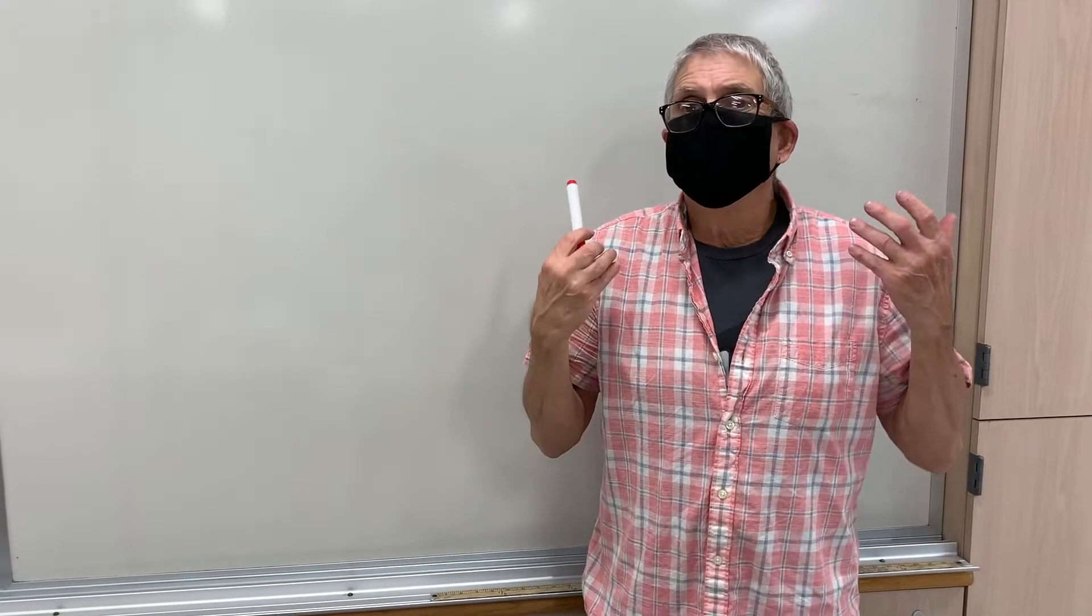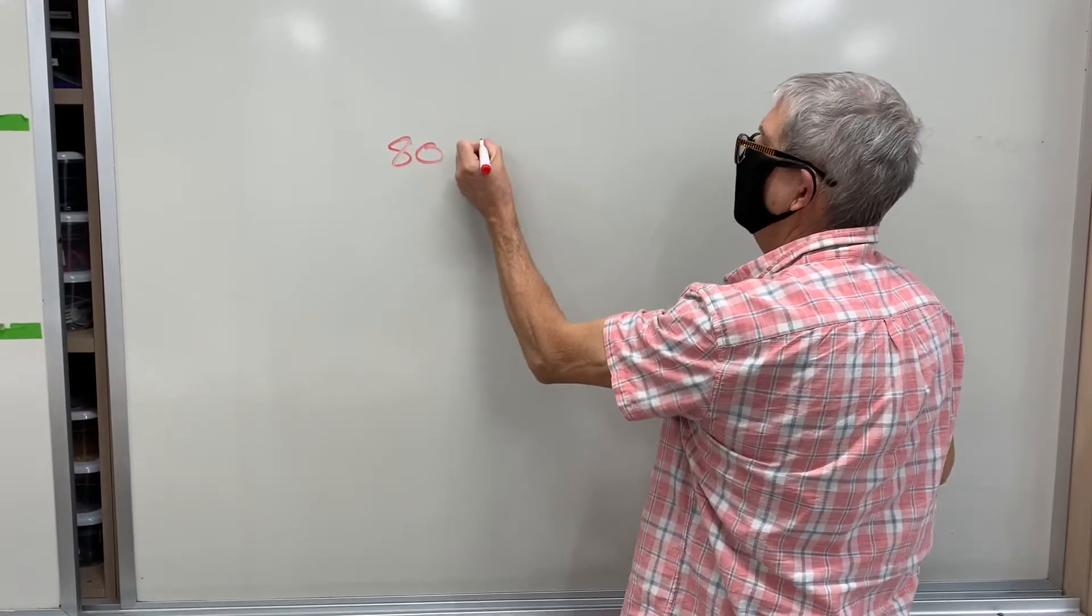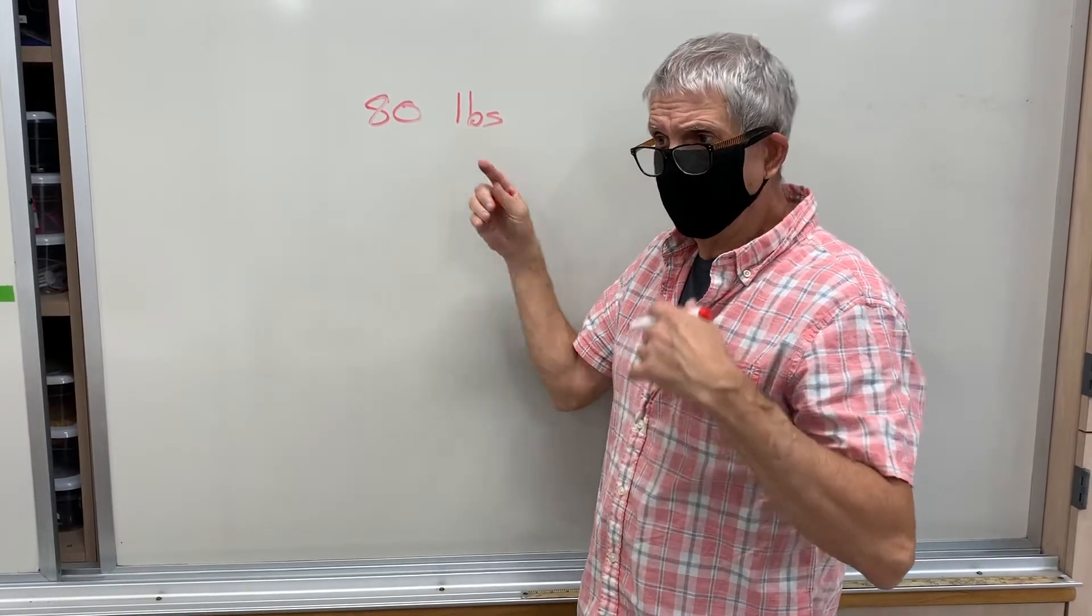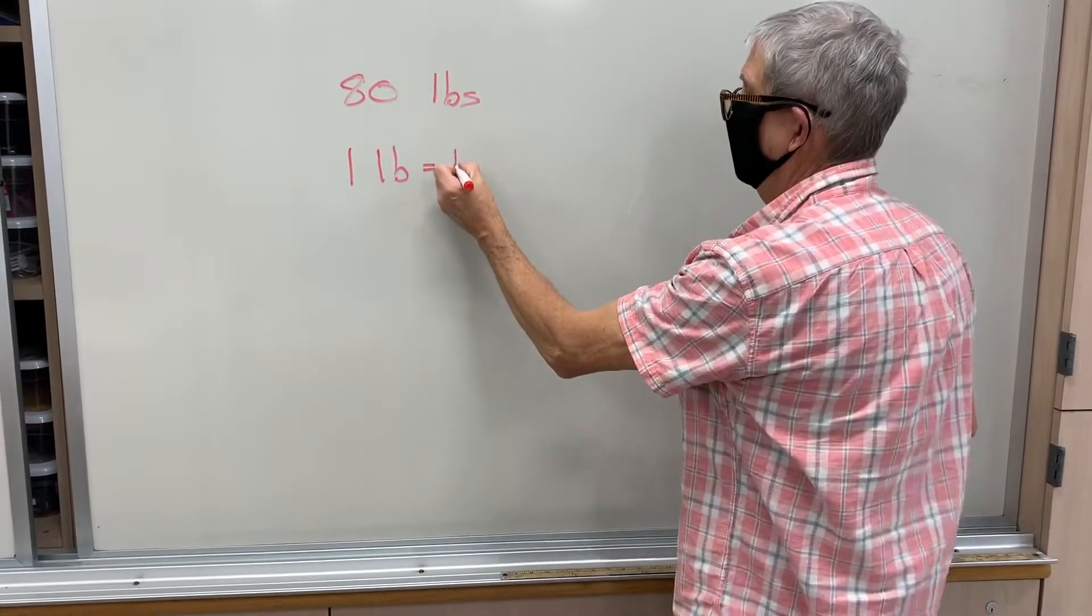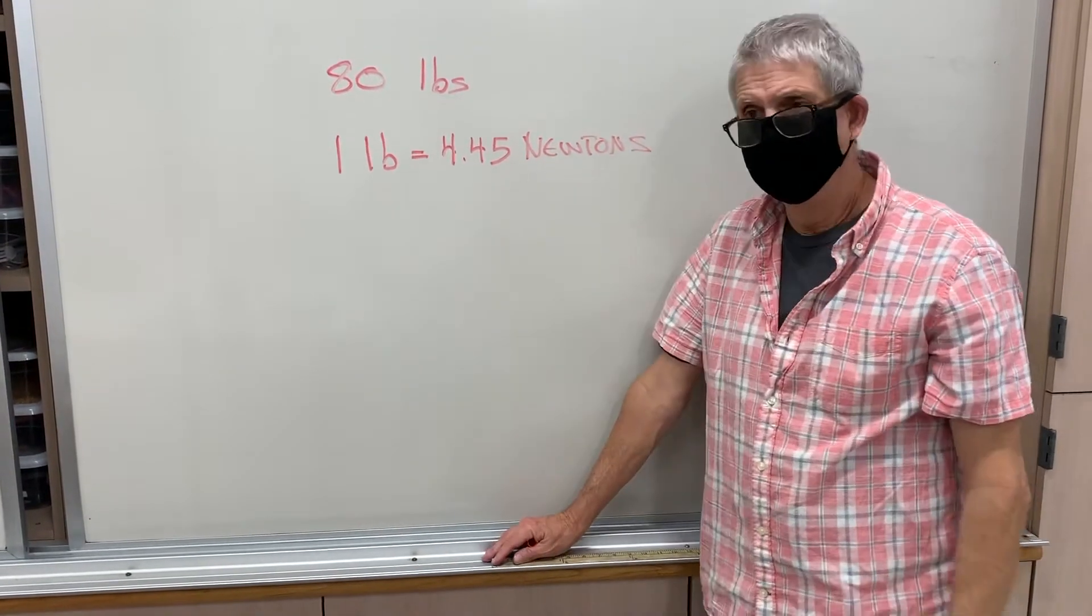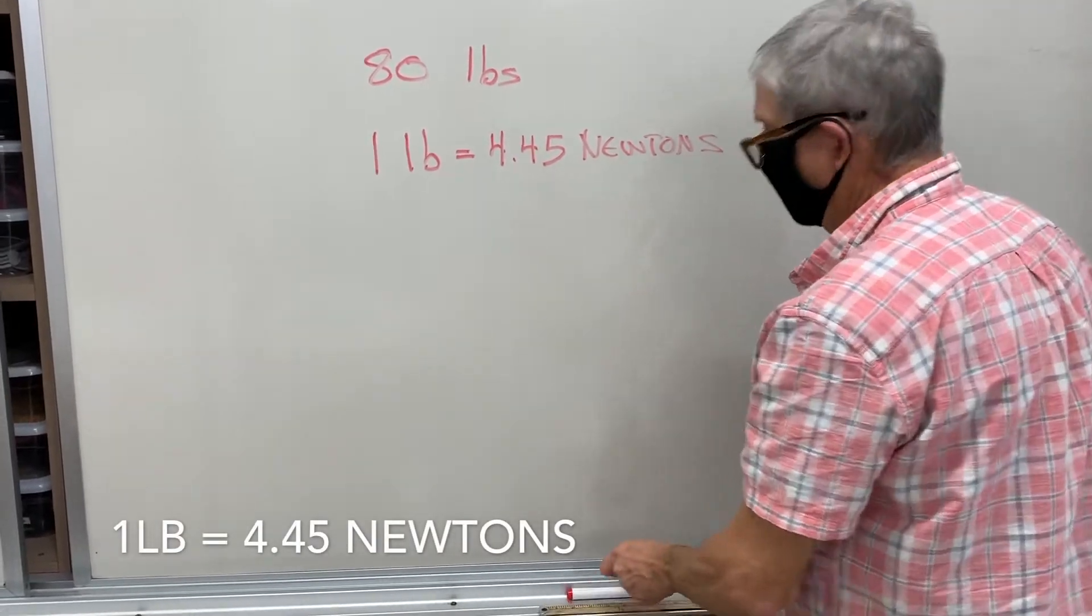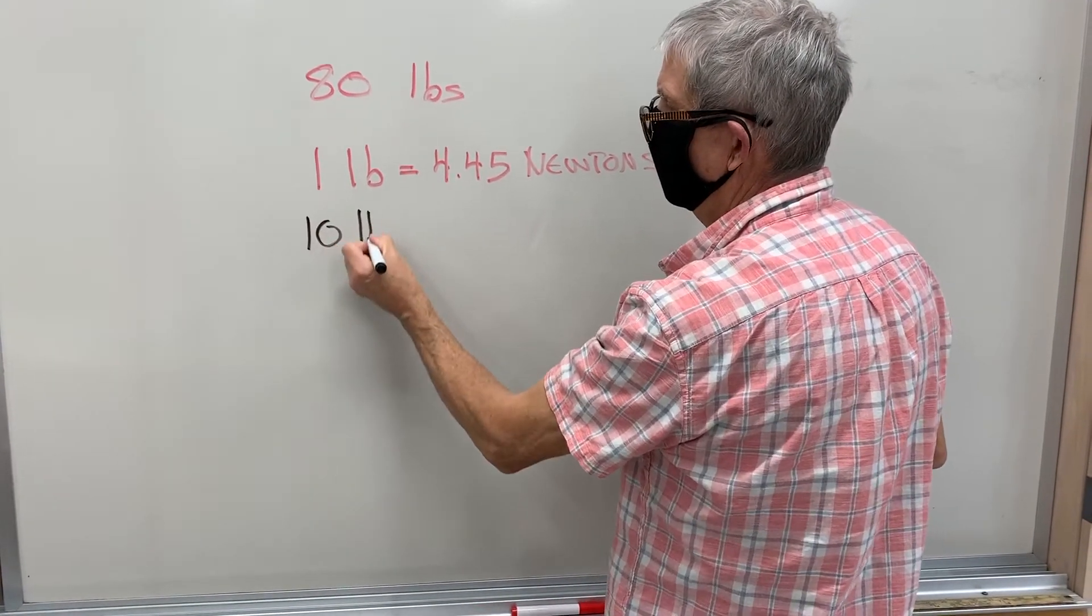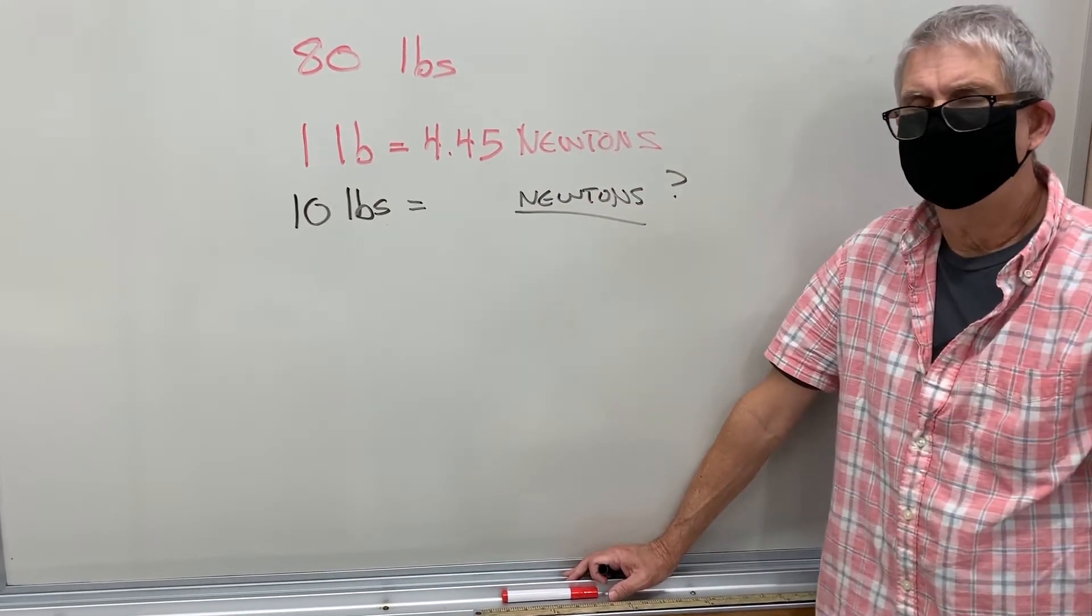We just recorded the amount from that scale—we measured it in pounds. If you recall, we got 80 pounds. We want to convert this into newtons. Let me give you a conversion: if you had one pound, that's going to be equal to 4.45 newtons. You didn't think it's going to be math? Math and science go together. So if we have one pound, we know we have 4.45 newtons. What if we had 10 pounds? How many newtons would that be?